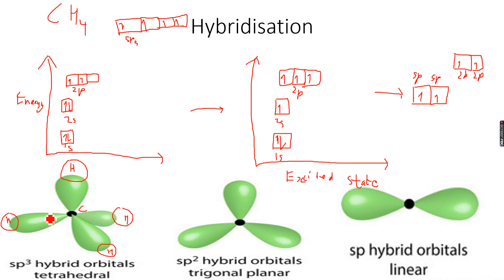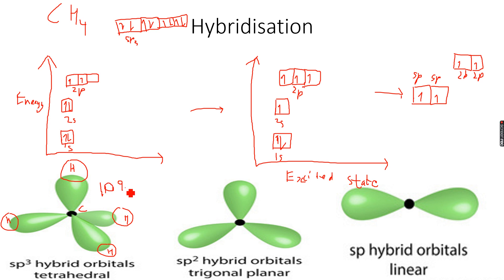When atoms share electrons, all the orbitals become full and the octet is complete — eight electrons in total. This is what SP3 hybridization is. All bond angles in SP3 hybridization are 109.5 degrees, which gives SP3 hybrids a tetrahedral shape. All the bonds in SP3 hybridization are called sigma bonds.